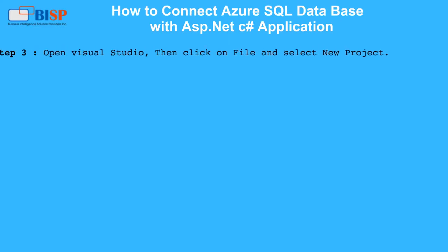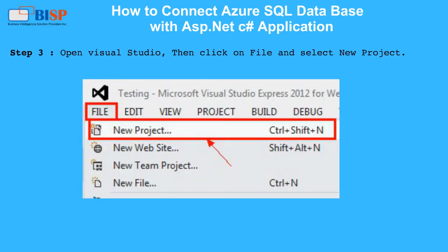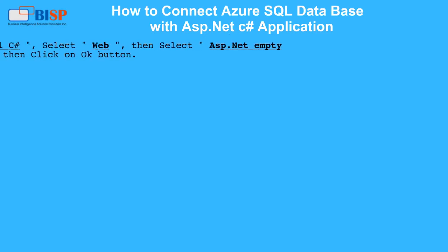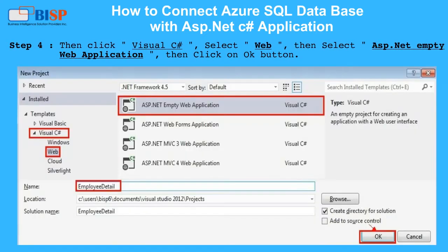Step 3: Open Visual Studio, then click on File and select New Project. Step 4: Click on Visual C#, select Web, then select ASP.NET Empty Web Application, then click the OK button.